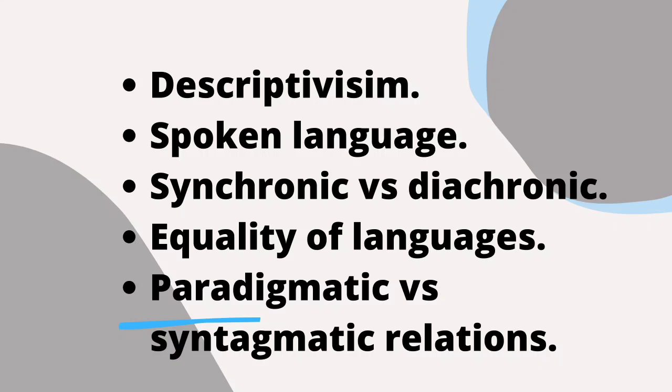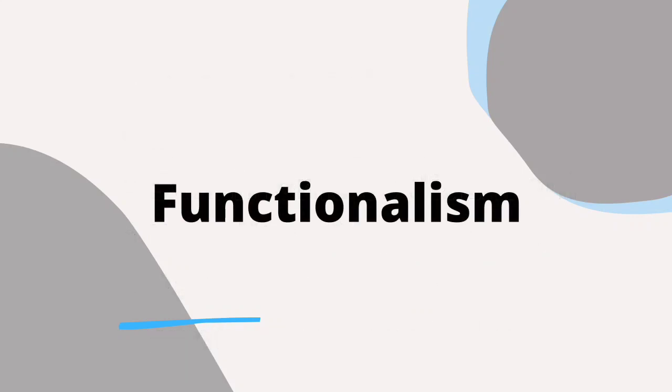For the syntagmatic relations, it means that a linguistic unit enters into relations with other elements of the same level, but which it occurs and which make its context. For example, in the example I stated before, 'a cup of milk', we have the word 'a' and 'cup' and 'of' and 'milk'. Four words, they occur with each other and they make context. These are syntagmatic relations. This is the first main principle of modern linguistics.